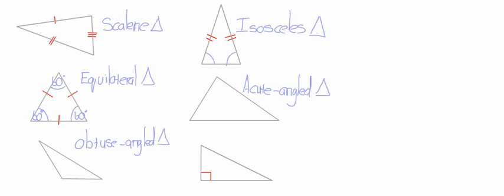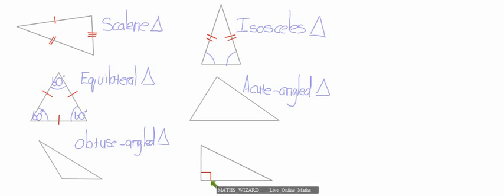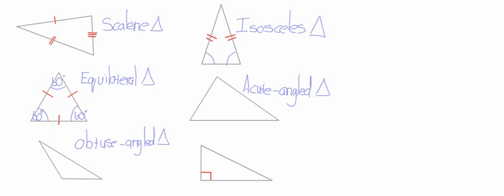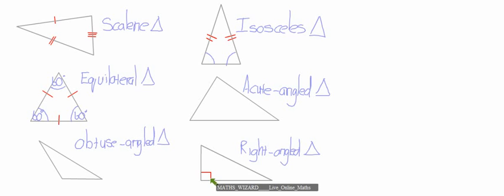And then the last triangle we have over here — as you can see, this angle is shouting out: I'm 90 degrees! So if you see this symbol over here, you know it stands for 90 degrees. We will call this triangle a right-angled triangle. Remember, in your right-angled triangle, one angle is 90 degrees.